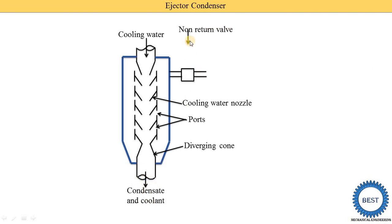From here, the non-return valve is put and the exhaust steam from the turbine is supplied here. These are the various components of an injector condenser.